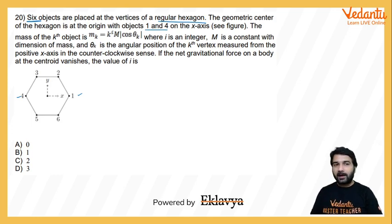The mass of kth object, if we start from one, then mass of the kth object is given by this expression: mk equals k to the power i capital M times the mod of cos theta k, theta subscript k.